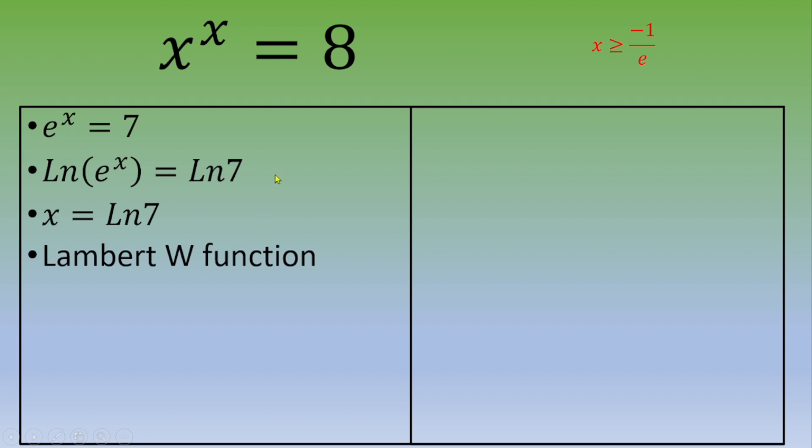So, the Lambert function w indicates this is a Lambert W function. The Lambert W function, W of star times e to the star equals star, whatever star is.